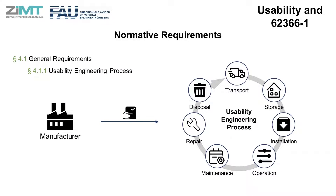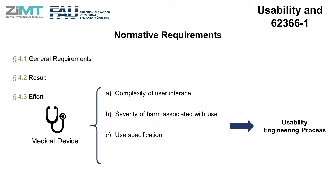As written in the general requirements of this standard, the manufacturer shall establish, document and maintain a usability engineering process to provide safety for the patient. This process shall address user interaction with the medical device according to the accompanying documentation, including but not limited to transport, storage, installation, operation, maintenance, repair and disposal of the device. The level of effort and the choice of methods and tools used to perform the usability engineering process depend very much on the device and may vary based on the severity of harm associated with the use, the use specification, and the size and complexity of the user interface.